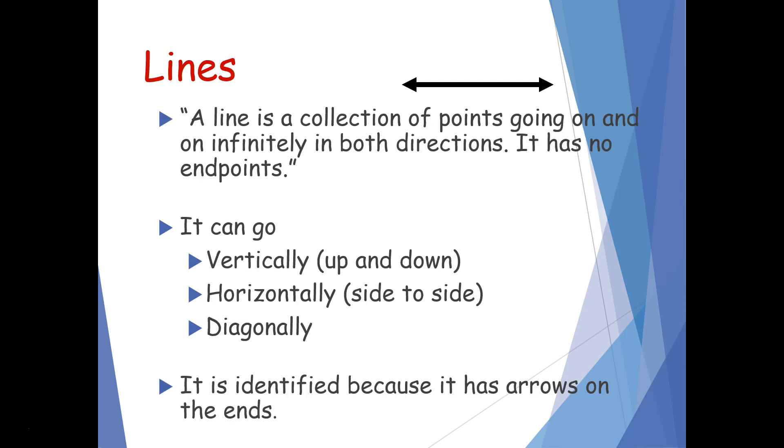You also learned about a line, which is a collection of points going on and on infinitely in both directions. Lines do not have endpoints and they can go vertically, horizontally, or diagonally. You know that it's a line because it has arrows on either side of it to show that it goes on and on and on with no end.